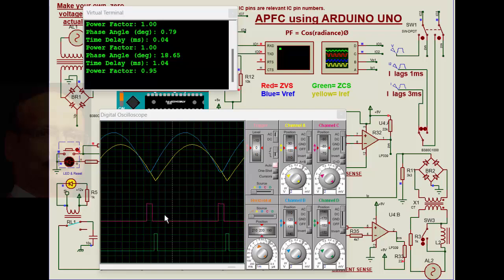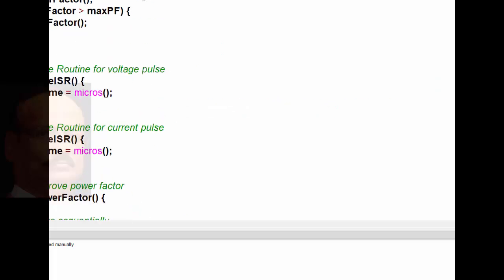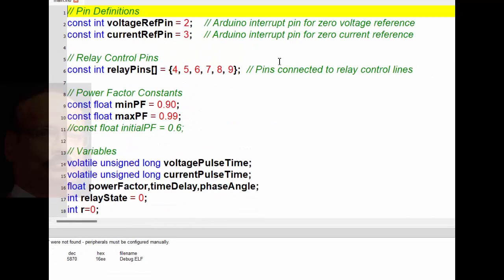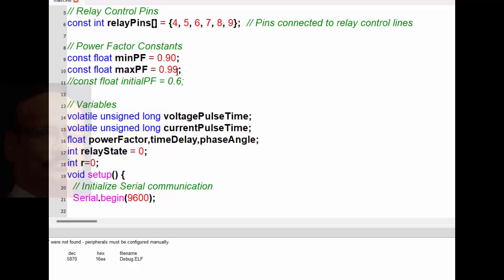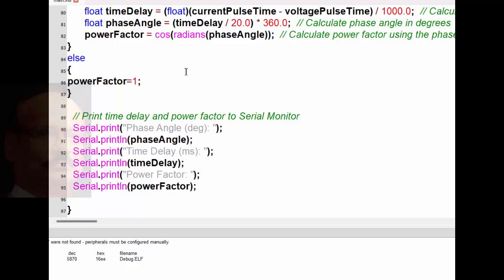If you look at the code — the sketch — we have the source code here. We take voltage reference and current reference at their respective pins, then we have taken relay pins driven by the ULN2003. We have also set some minimum and maximum power factor values, and the rest is straightforward code you can understand easily. This code is compiled here itself, and through it you can see the functioning of the circuit.